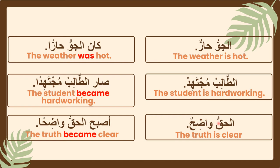Next: الحقُّ واضحٌ — الحق is مُبْتَدَأ and واضحٌ is خَبَر. But if كان وأخواتها enter the sentence, الحق changes to إسمُ أصبحَ and واضحٌ changes to خَبَرُ أصبحَ. Notice how in normal sentences the خَبَر has ضَمَّتَيْن, while in sentences using كان وأخواتها, the خَبَرُ كان has فَتْحَتَيْن — for example, حَارٌ changes to حَارًا، مُجْتَهِدٌ changes to مُجْتَهِدًا، واضحٌ changes to واضحًا.